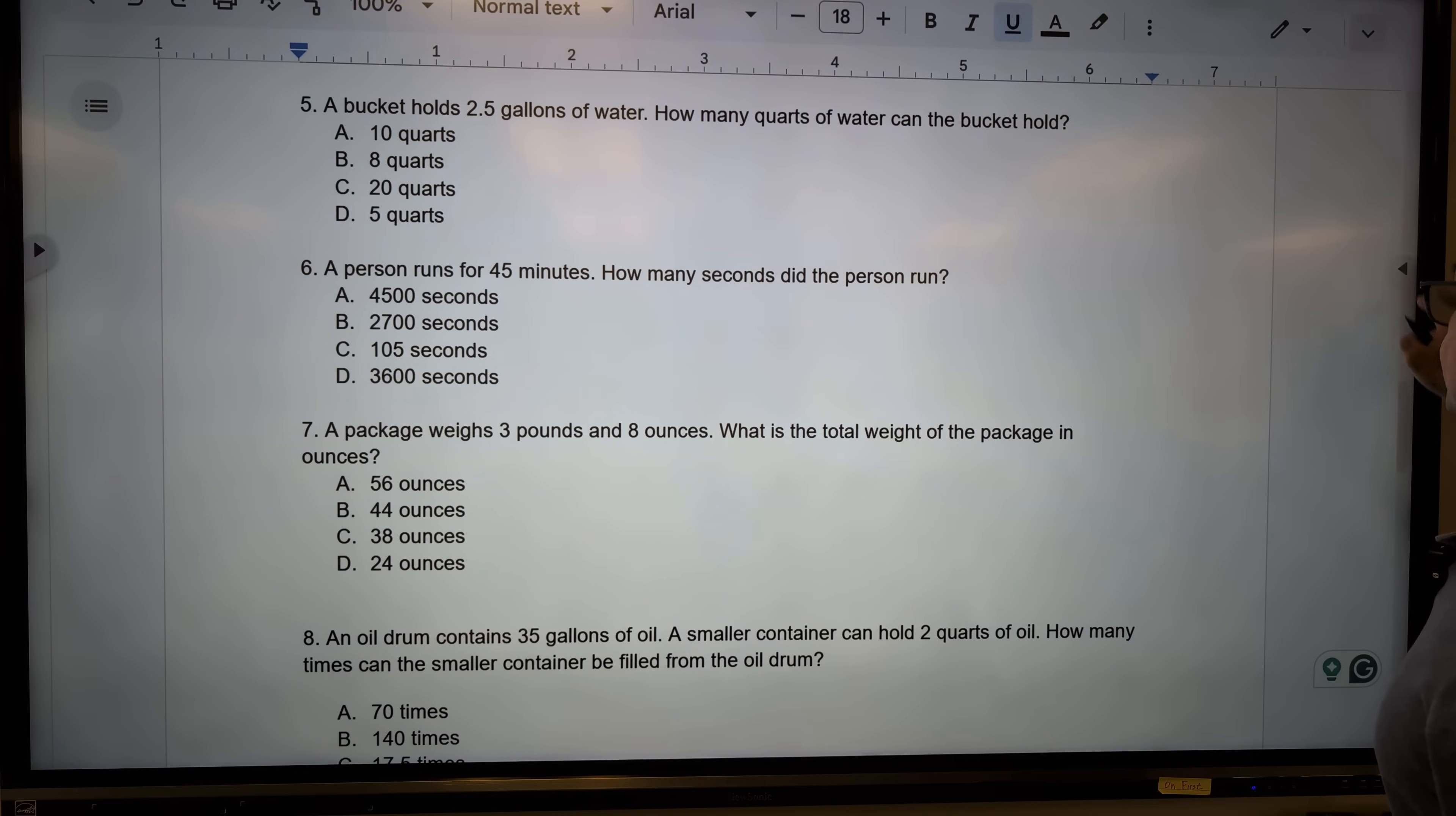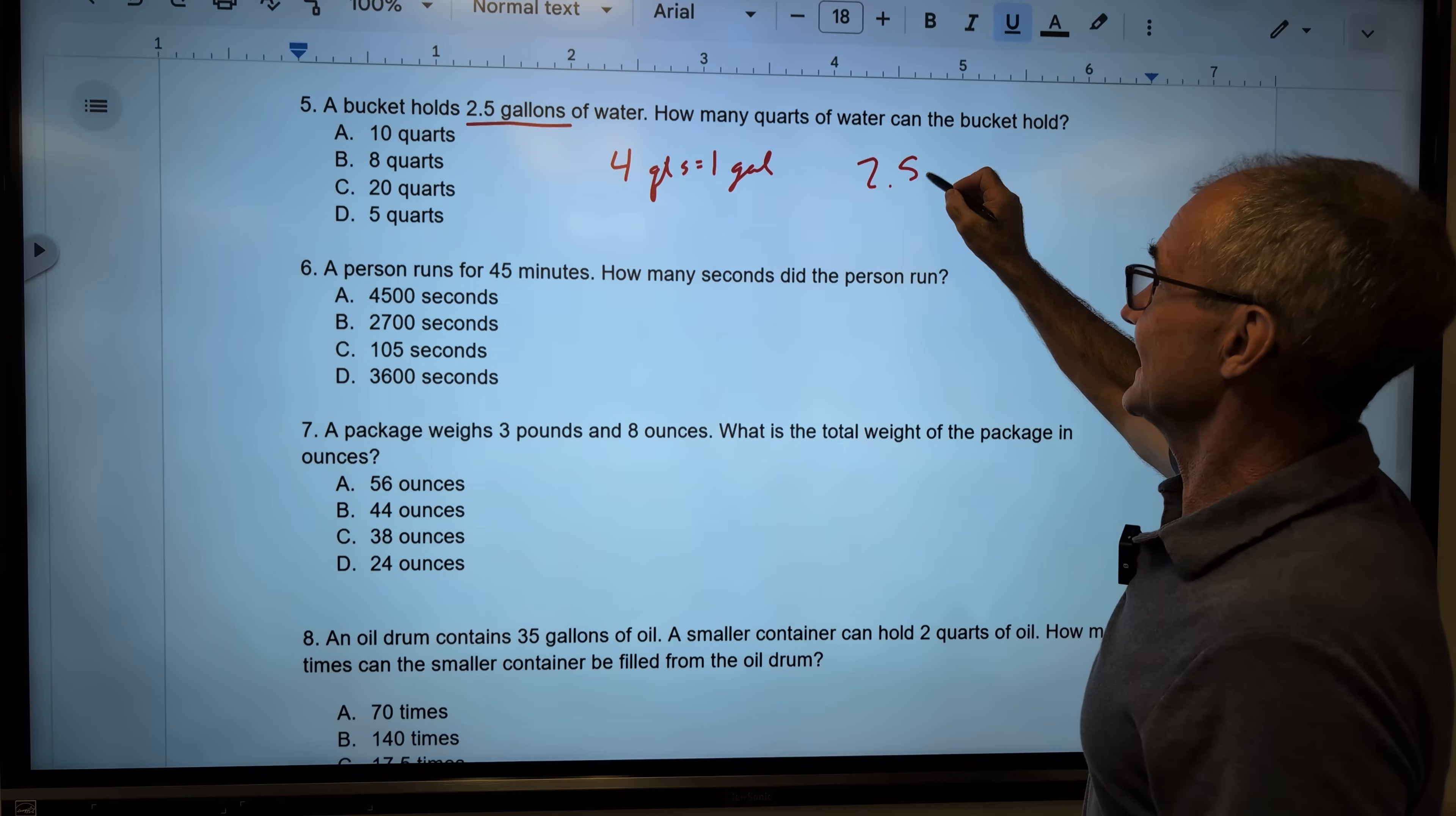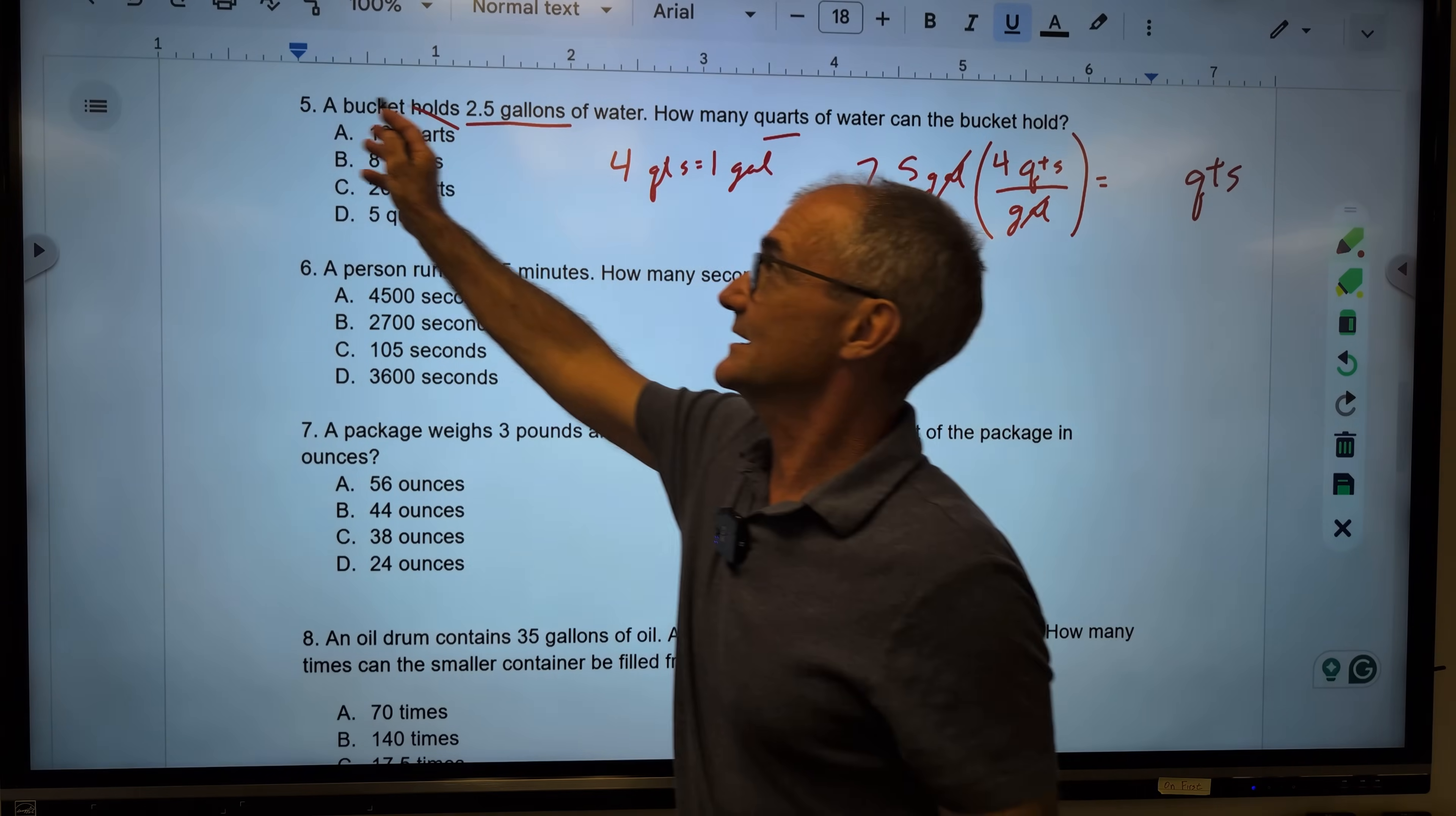Number five, bucket holds two and a half gallons of water. How many quarts of water can the bucket hold? So if you go back to page one, four quarts equal a gallon. So I know it's going to be a lot more than two and a half. So I have those two and a half gallons times that ratio of quarts to gallons, four quarts to the gallon. I know gallons go down here so they can cancel to give me quarts. Two and a half times four. Well, two and a half times two is five. So I'm going to double two and a half twice. Five, ten. Correct answer A, ten quarts.